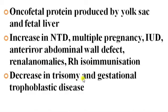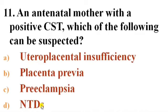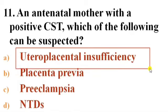Its low level is seen in conditions like trisomy — for example Down syndrome — and gestational trophoblastic disease. Next question: An antenatal mother with a positive Contraction Stress Test — which of the following can be suspected? Options: A) Uteroplacental insufficiency, B) Placenta previa, C) Preeclampsia, D) Neural tube defects. Answer is A — Uteroplacental insufficiency.